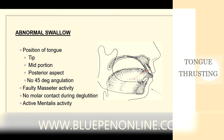In the case of abnormal swallow, the tip of the tongue will be between the incisors, whereas in normal swallow it is placed behind the maxillary incisors with the mid and posterior portions resting on the floor of the mouth. Normally the tongue forms a 45-degree angle. Abnormal swallow is also characterized by faulty masseter activity, no molar contact during deglutition, and mentalis muscle activity.